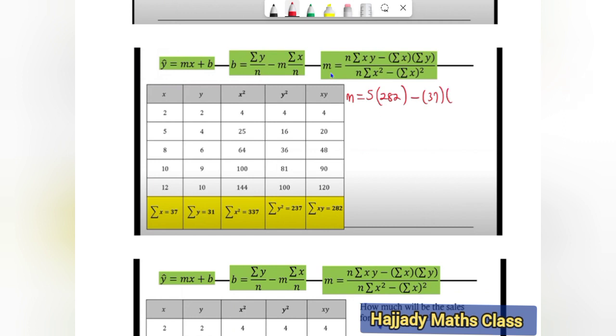And summation y is the same thing as 31 over n, which is 5 multiplied by 337, which is the same thing as x squared. So from this I have the value of my m.